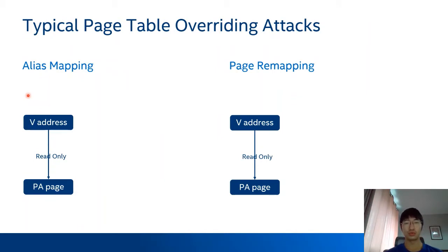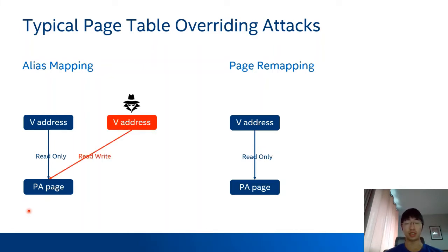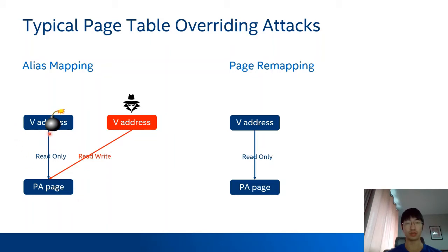Let's look at two typical page table overriding attacks. The first is alias mapping. For example, one virtual address is mapped to a physical page without write permission. If an attacker already has arbitrary memory access, they can set up an alias mapping to the physical page, and through this alias mapping memory writes are allowed, so the attacker can modify the page's content — perhaps injecting shellcode into this page — and then execute that code.